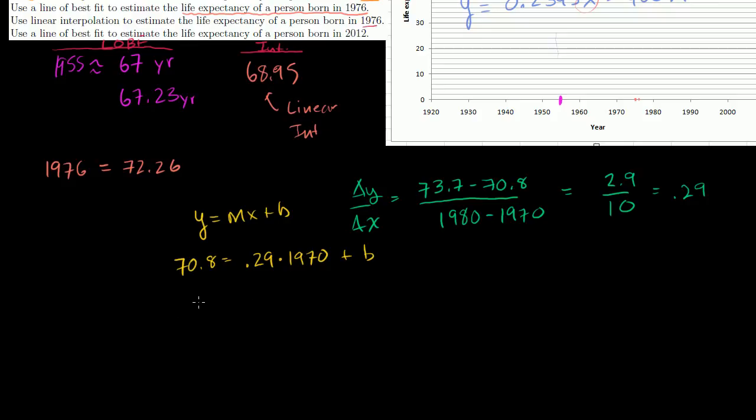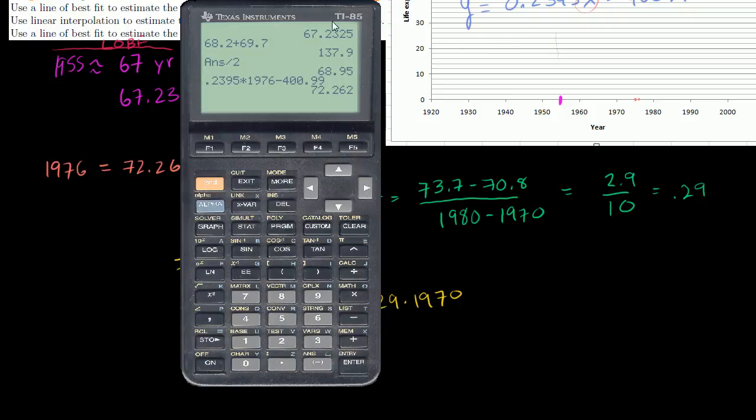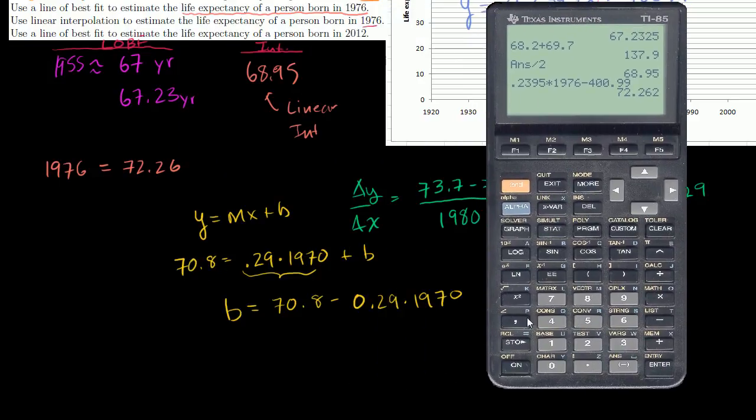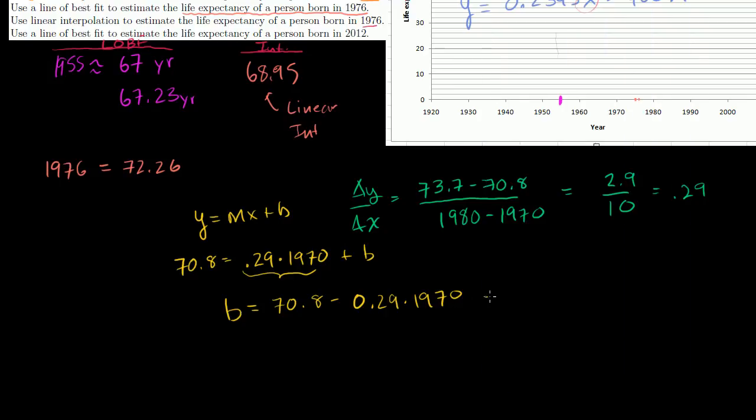Now we can calculate our y-intercept. So what is our y-intercept? Get our calculator out. We have to subtract this from both sides. So b is equal to 70.8 minus 0.29 times 1970. 70.8 minus 0.29 times 1970 is equal to minus 500.5. So this is equal to negative 500.5.